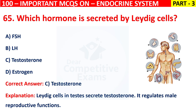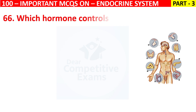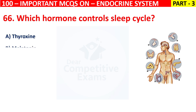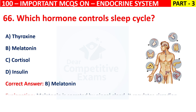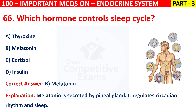Question 66: Which hormone controls the sleep cycle? The correct answer is B, that is Melatonin. Melatonin is secreted by the pineal gland. It regulates circadian rhythm and sleep.